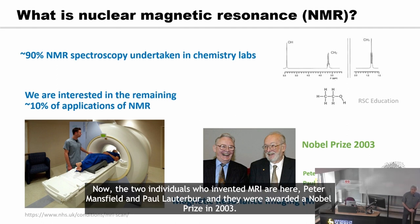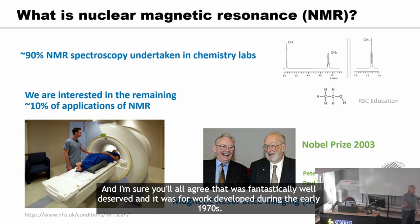The two individuals who invented MRI are Peter Mansfield and Paul Lauterbur. They were awarded the Nobel Prize in 2003, and we'll all agree that was fantastically well deserved. It was for work developed during the early 1970s. On the right here is the very first MRI image ever produced — a slice through the finger of a PhD student.